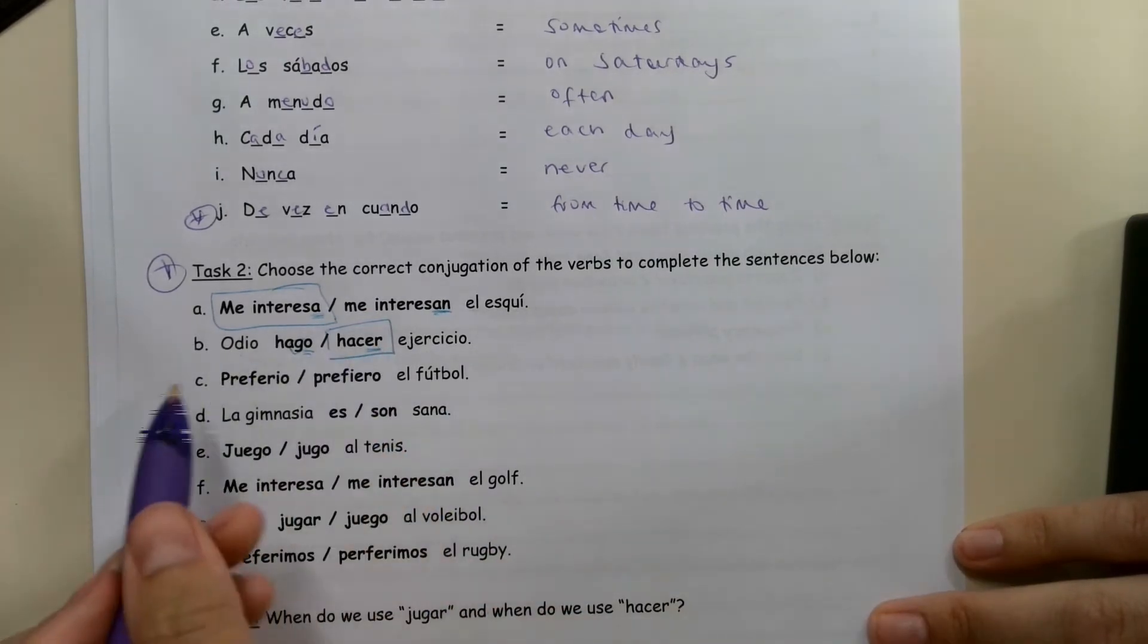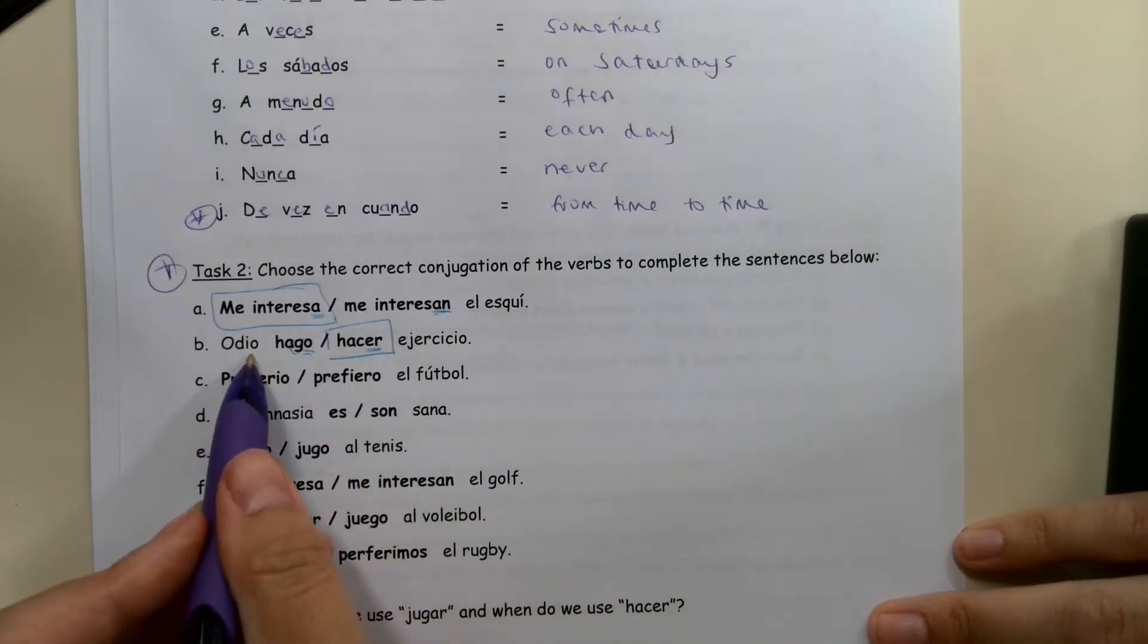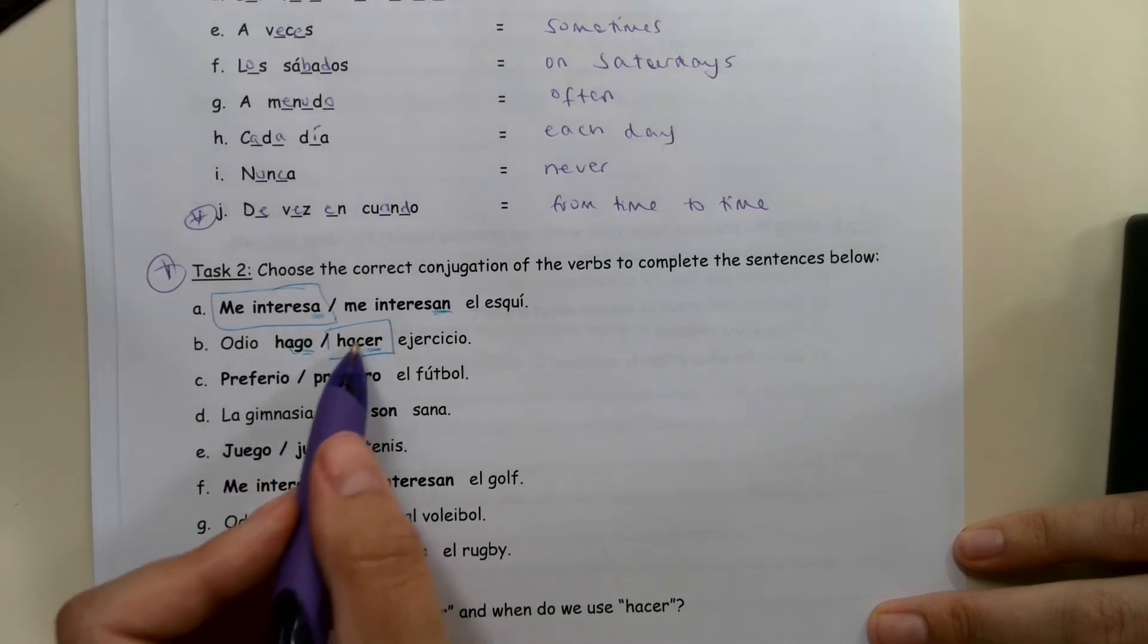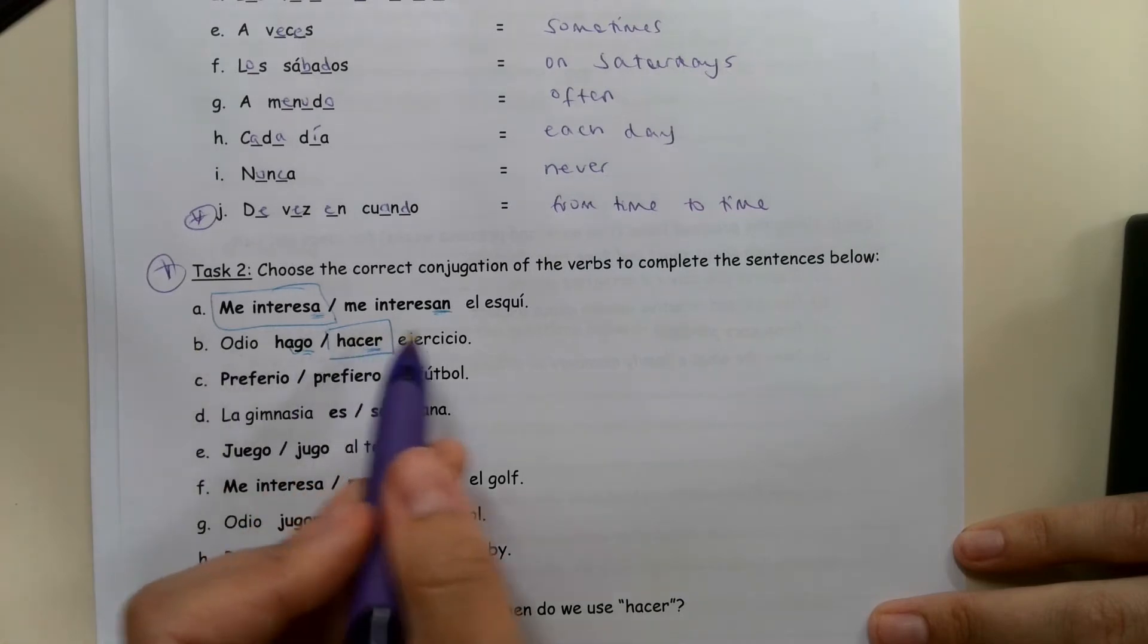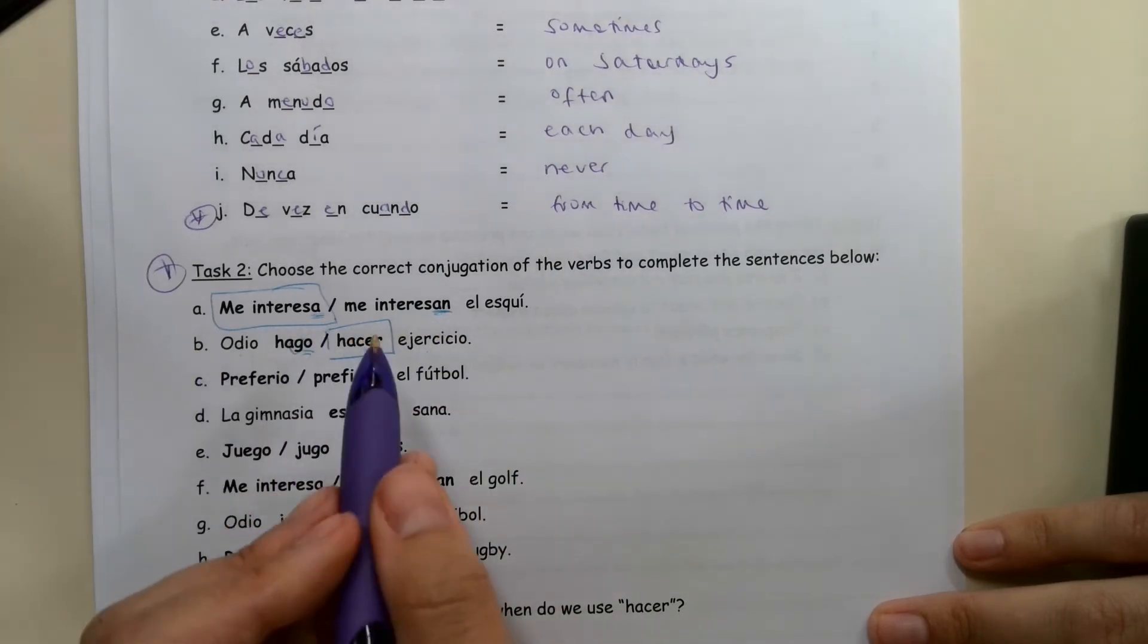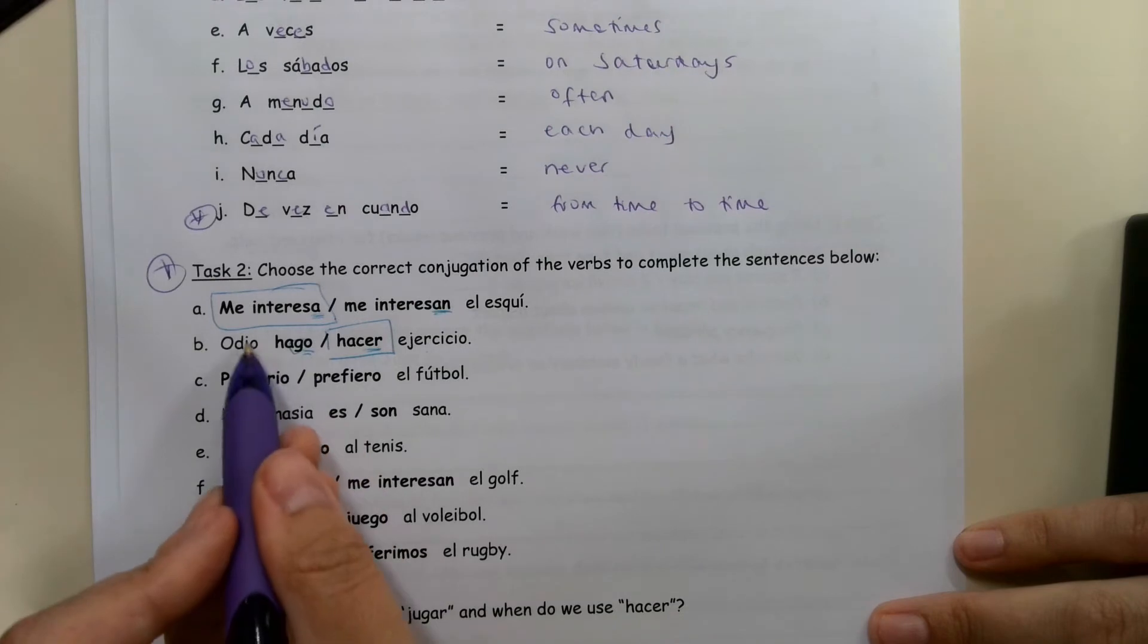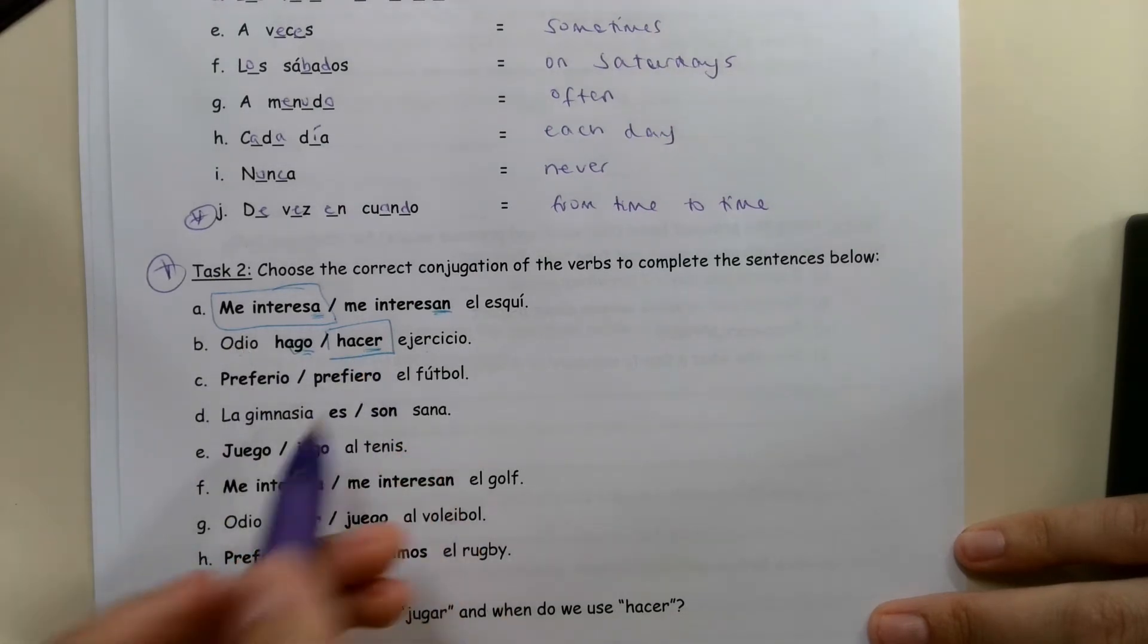This is always the case. If we have an opinion and then a verb, this second verb has to be in the infinitive. So I love to do, I hate to do, I like to sing, I hate to swim, any of those. First verb, I, and then the second verb, to do something.